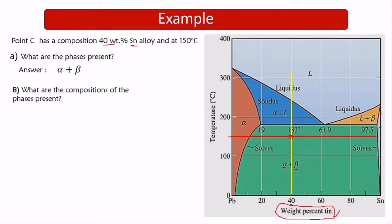The next question is: what are the compositions of the phases present? We have alpha plus beta. When thinking about composition, it is read on the horizontal axis in weight percent tin. So the composition of each phase will be expressed in weight percent tin.